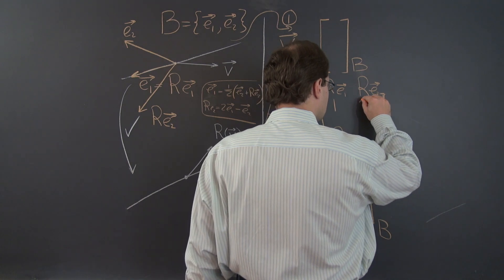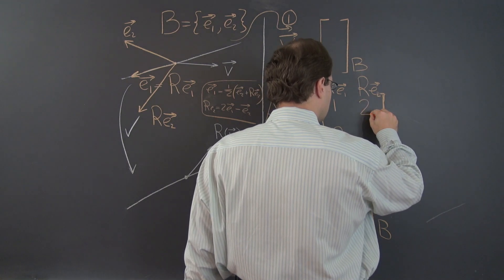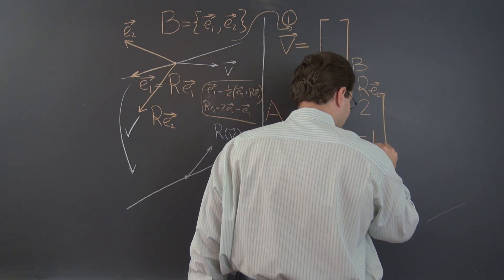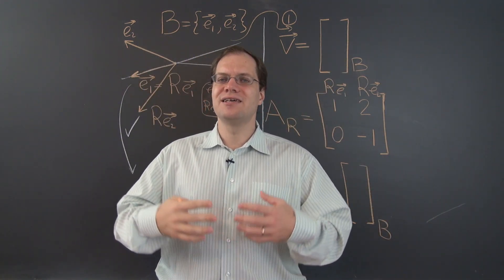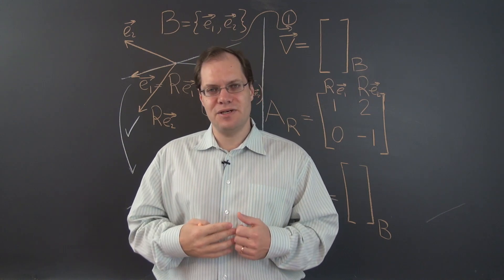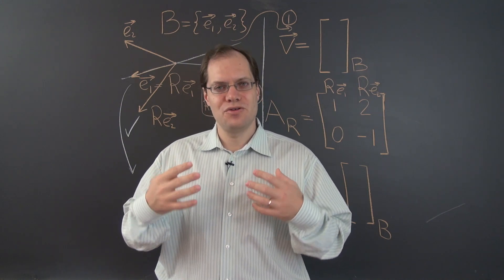So the coefficients are 2 and negative 1. 2 and negative 1. And we're done. We have constructed the matrix that represents this linear transformation with respect to this basis.